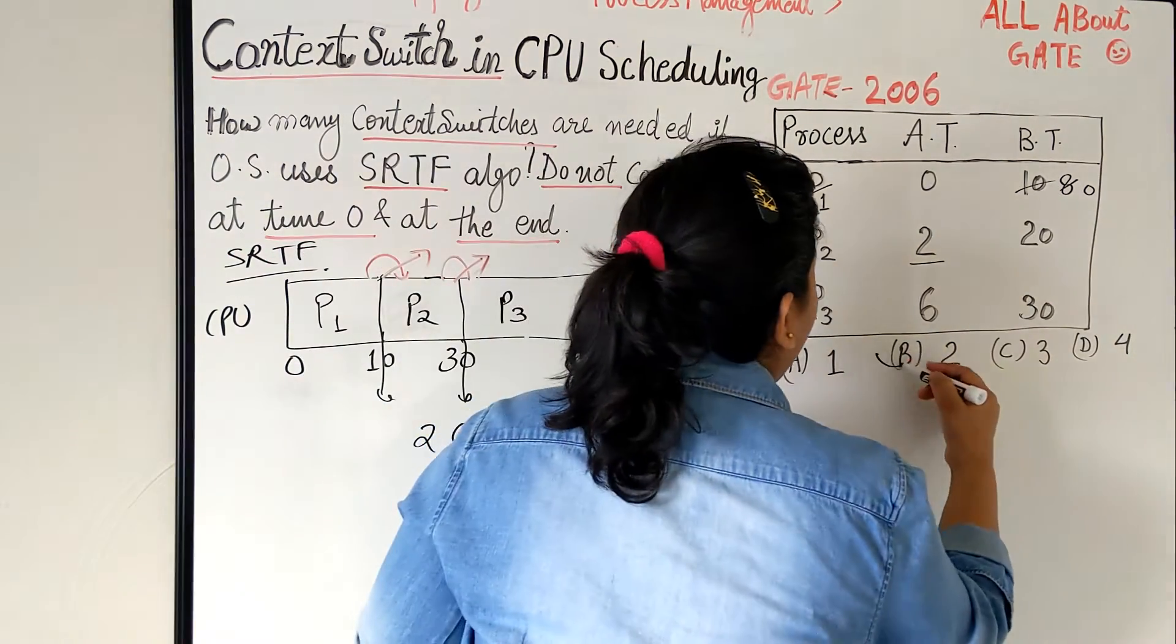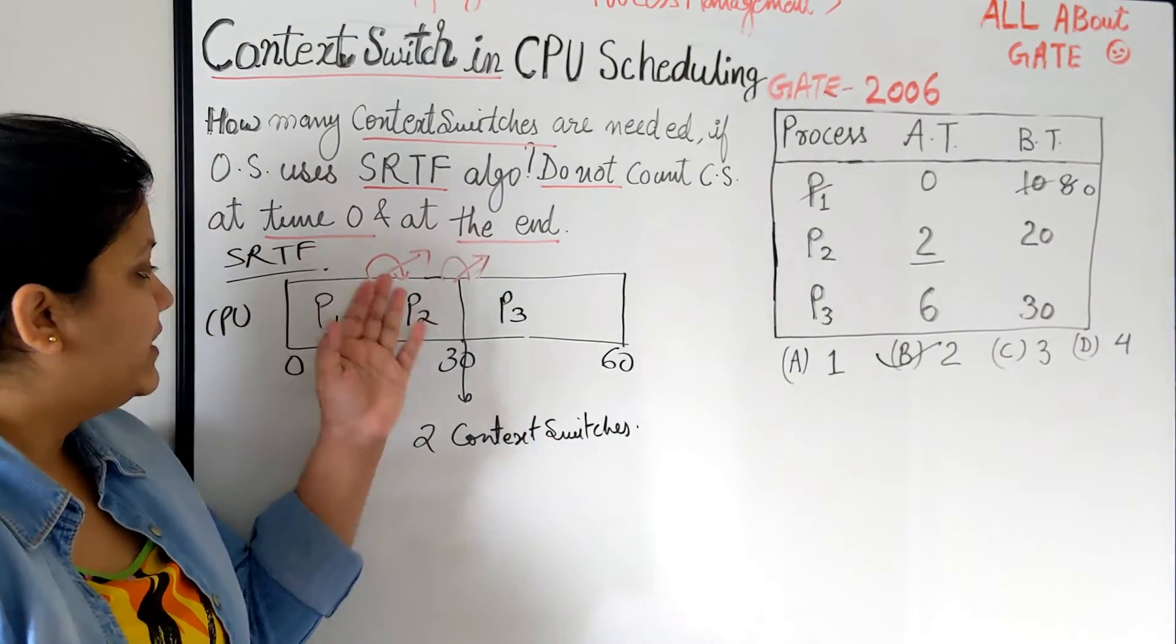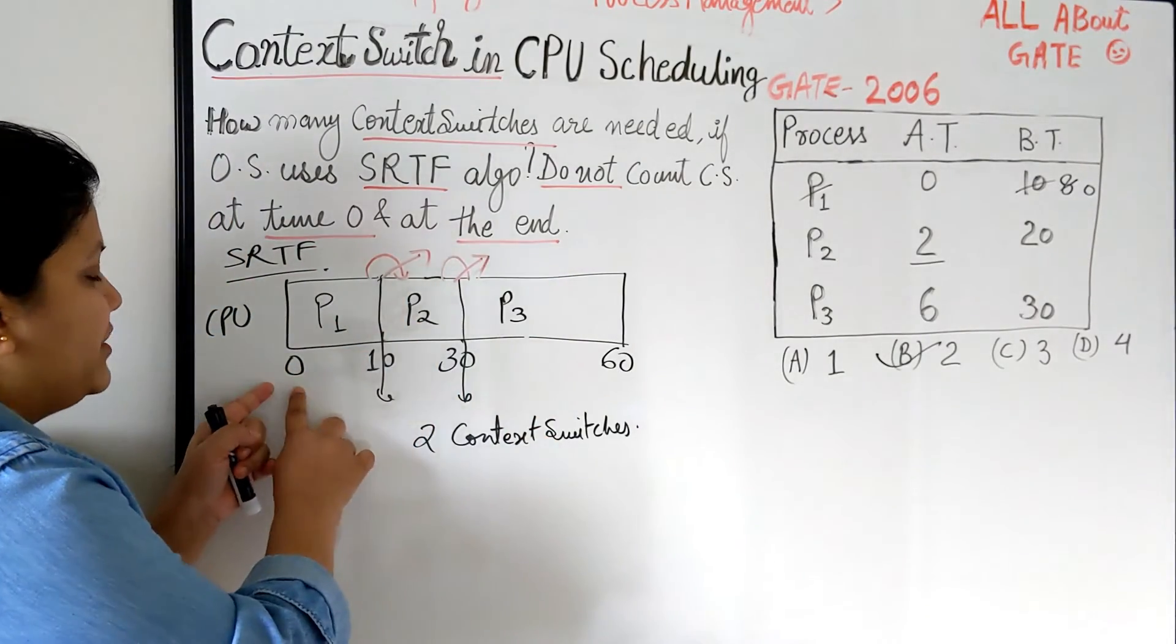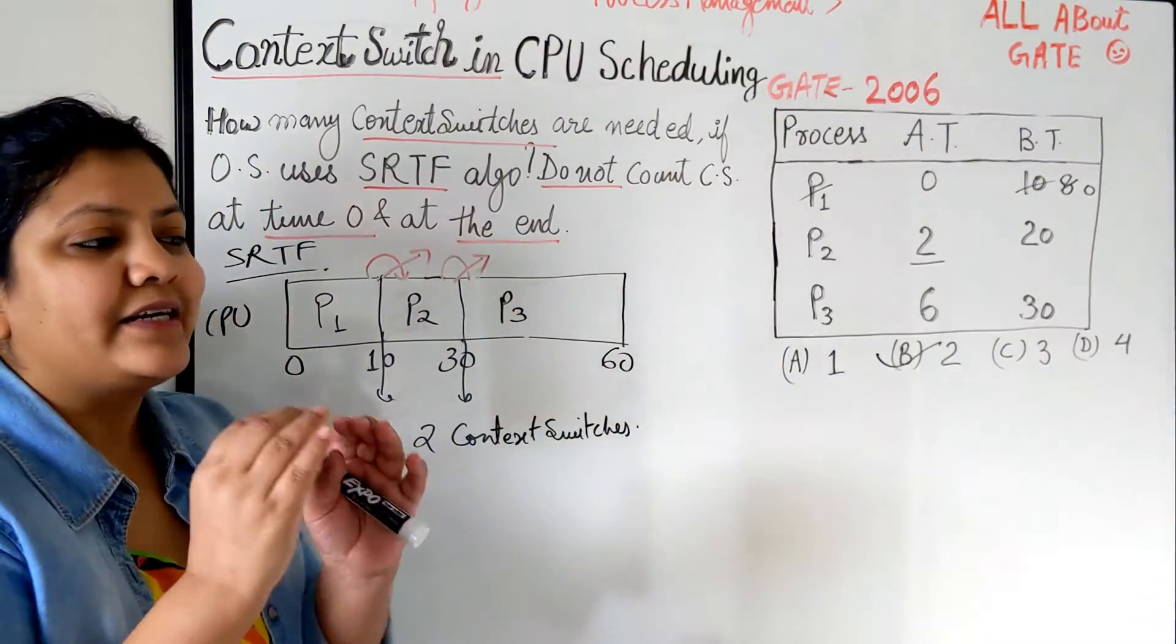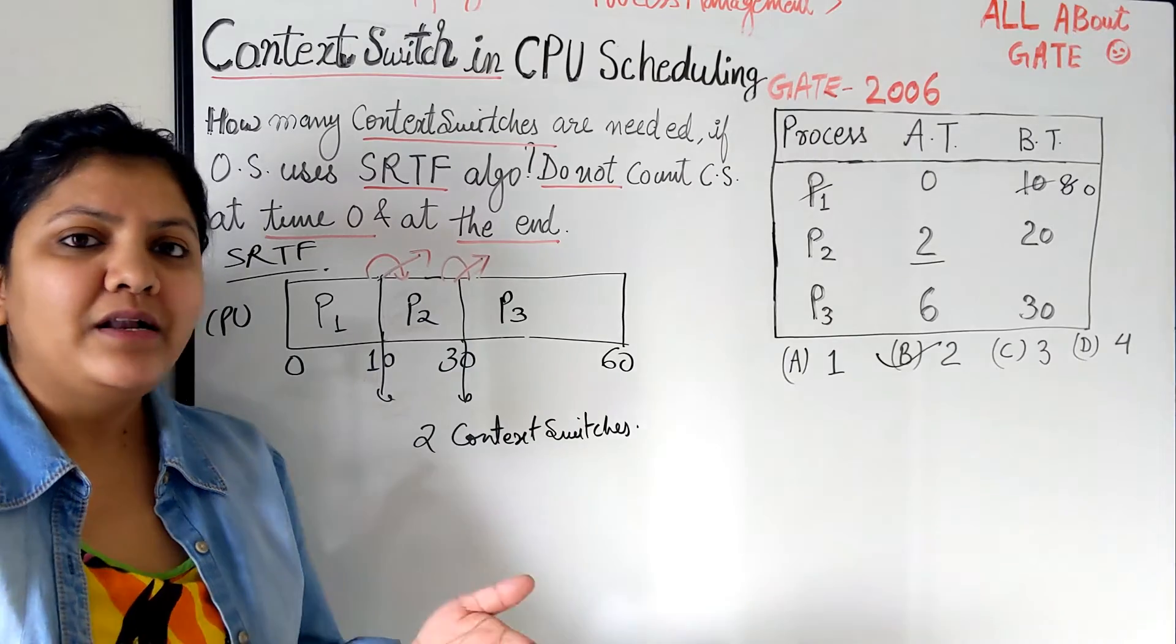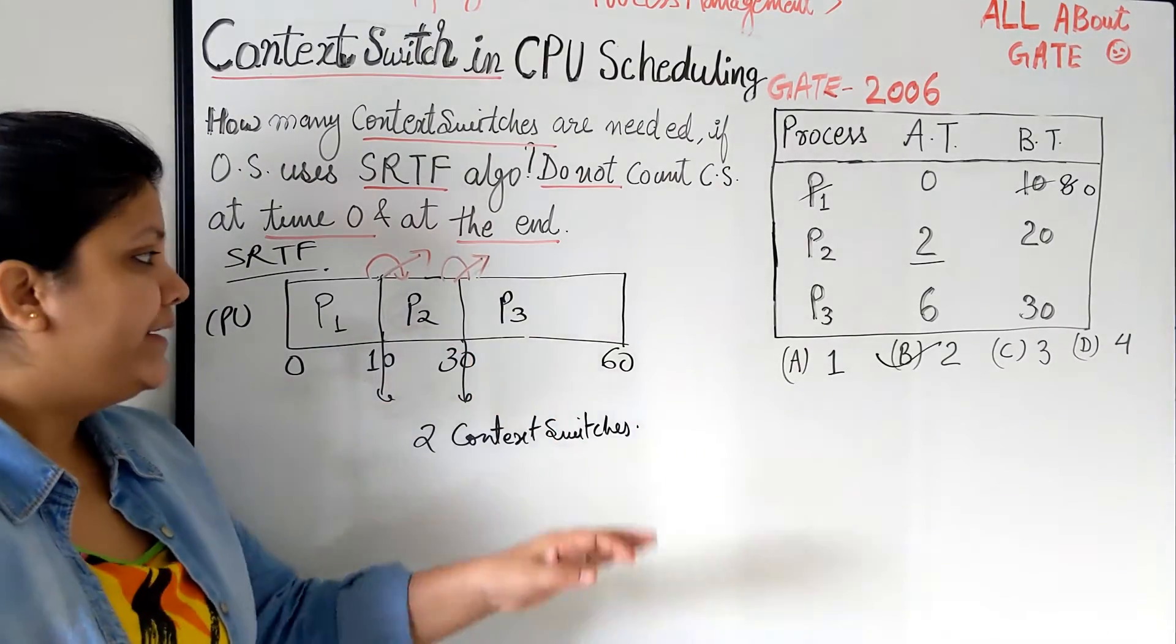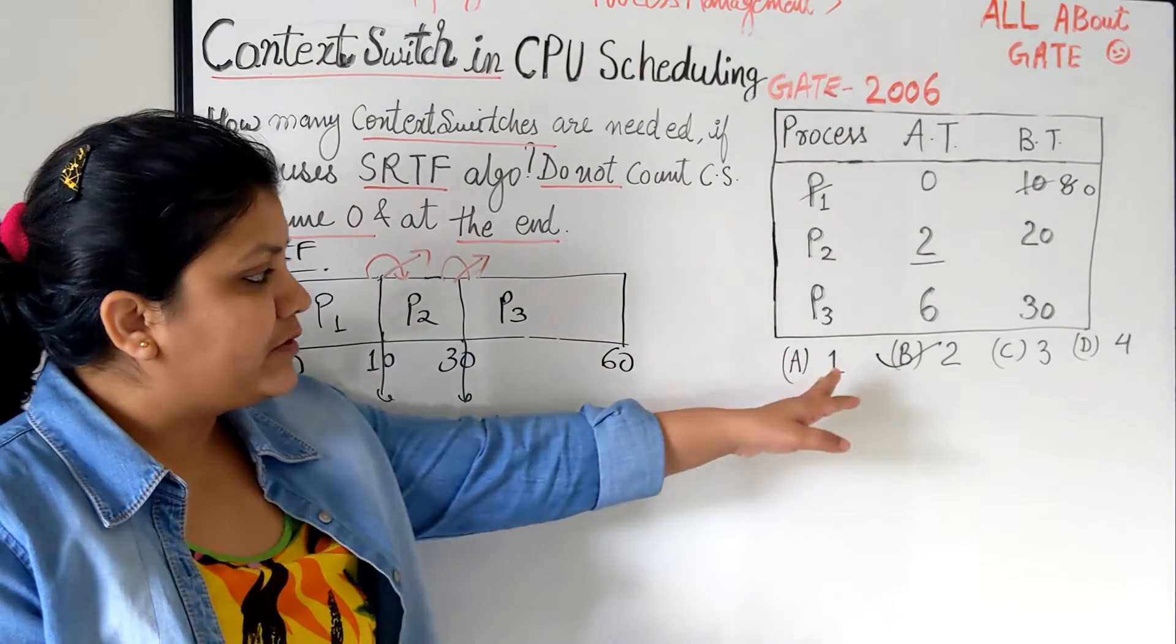So the answer becomes option B that we have 2 context switches and it is clearly mentioned in the question and you also understand that at time 0 we just have 1 process and at the end also we just have 1 process so that is not considered as the context switch because that is just simple saving and loading.